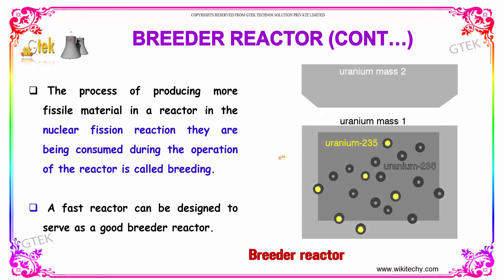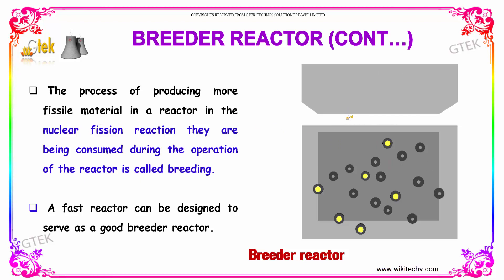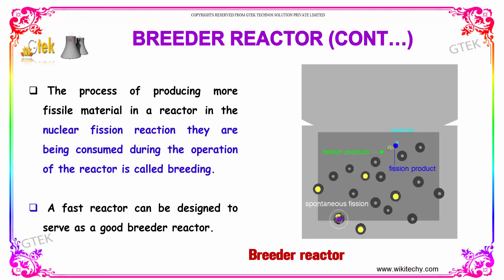The process of producing more fissile material in a reactor during the nuclear fission reaction, where fissile material is being generated during the operation of the reactor, is referred to as breeding. You can see the breeding option. A fast reactor can be designed to serve as a good breeder reactor.